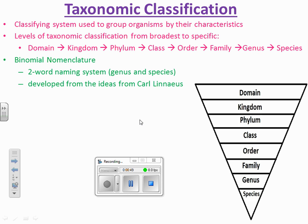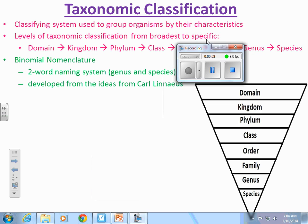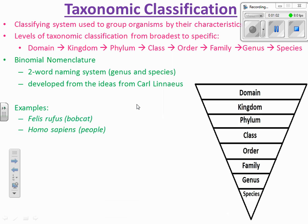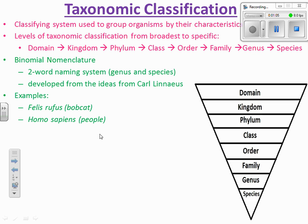Binomial nomenclature is a two-word naming system that uses the genus and the species. This way of naming organisms was developed from the ideas of Carl Linnaeus. An example would be Felis rufus — the genus is Felis and rufus is the species, which is the name for a bobcat. For humans, it's Homo sapiens. Scientists use this system so they can communicate across the world, because not everybody speaks English — everybody understands the genus and the species.